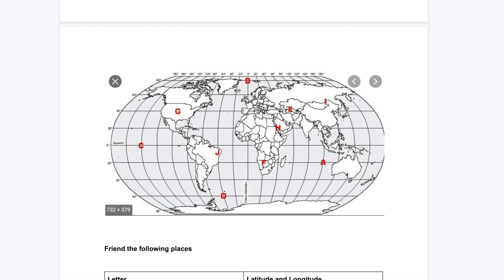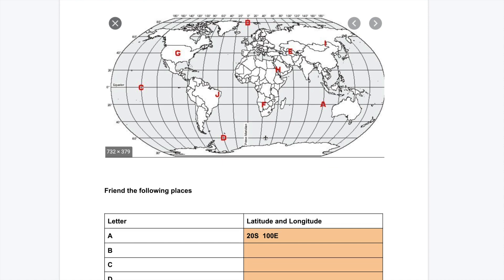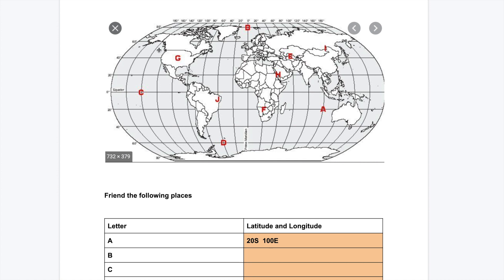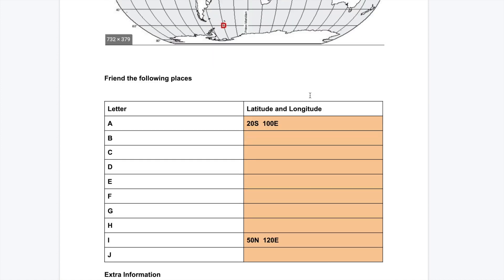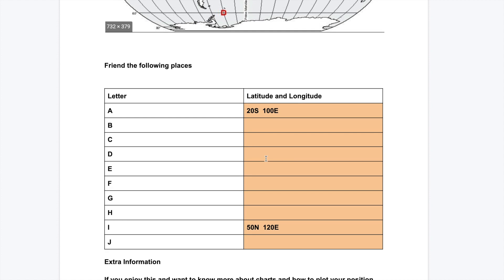So you've got your north, south, east and west and what I'd like you to do is just pop in the latitude and longitude of these letters. I've done the first one for you. So A is on this line, which is 20 degrees south, 20 degrees south and if we go up to the top, it's 100 degrees east. And I've also done I for you. So I is in the middle of this one between 40 and 60. It's 50 degrees north and follow it up 120 degrees east. So if you can complete the rest of these, your latitude first, then your longitude, that's the end of this exercise.